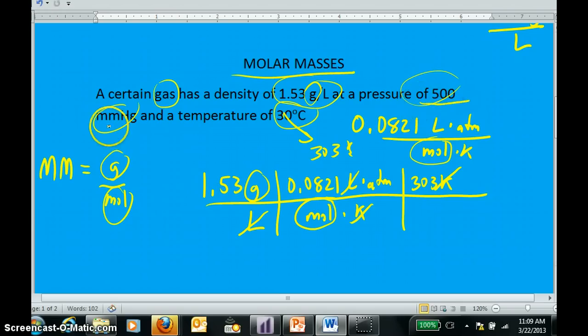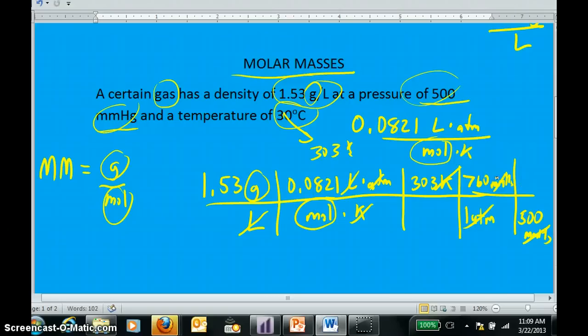Of course, I was given my pressure in millimeters of mercury, not atmospheres. So I would first convert my atmospheres to millimeters of mercury. One atmosphere is 760 millimeters of mercury. And the atmospheres cancel and are replaced with millimeters of mercury, which I can then cancel by dividing by the 500 millimeters of mercury I've been given.